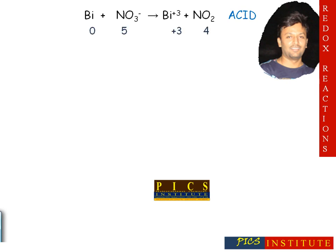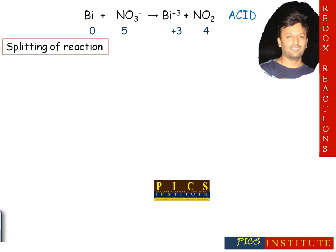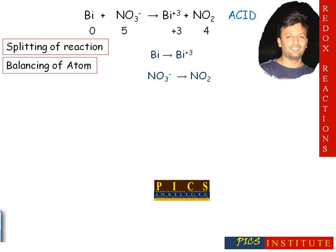The oxidation numbers of various species are noted. The first step is splitting of the reaction — we split the reaction into two parts. The second step is balancing of atoms other than oxygen and hydrogen. In this case there is no need to balance atoms, since atoms present on the left-hand side are equal to atoms present on the right-hand side. Oxygen will be balanced in the last step.